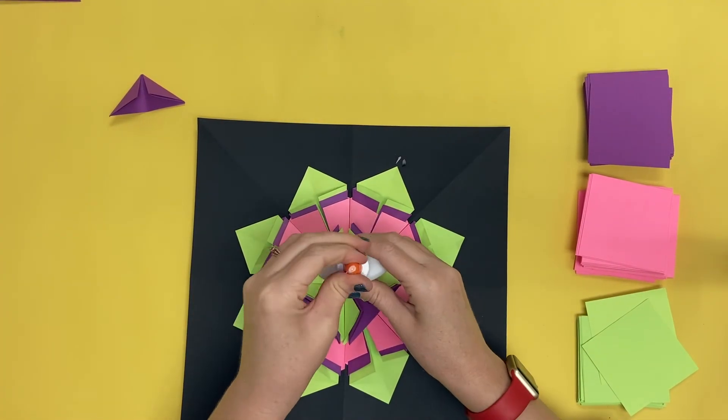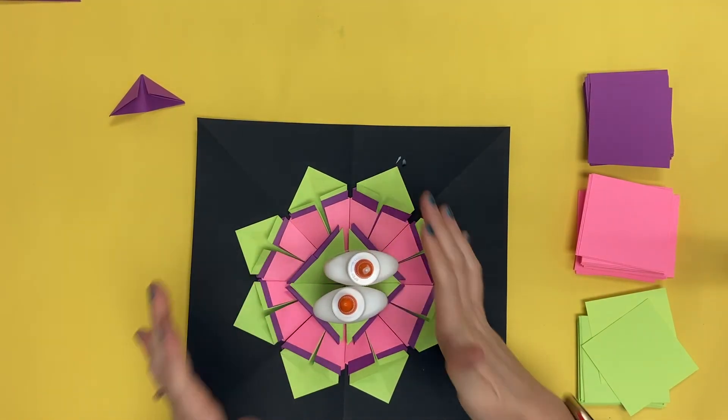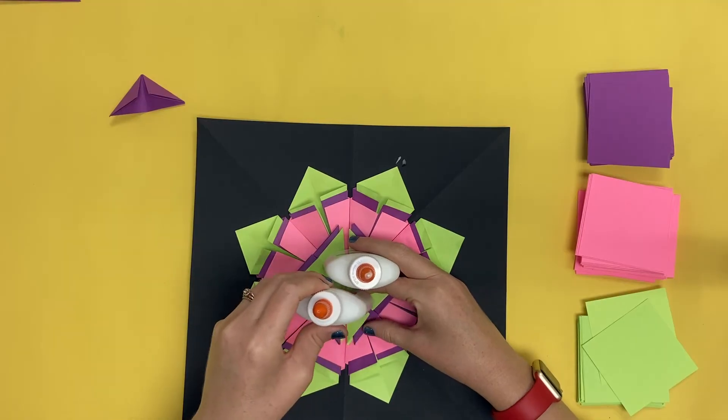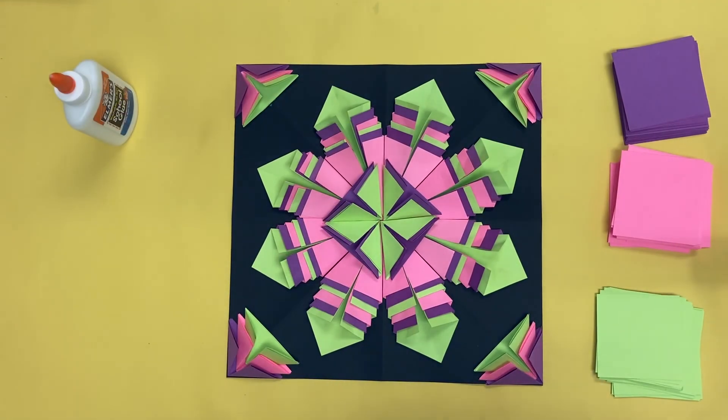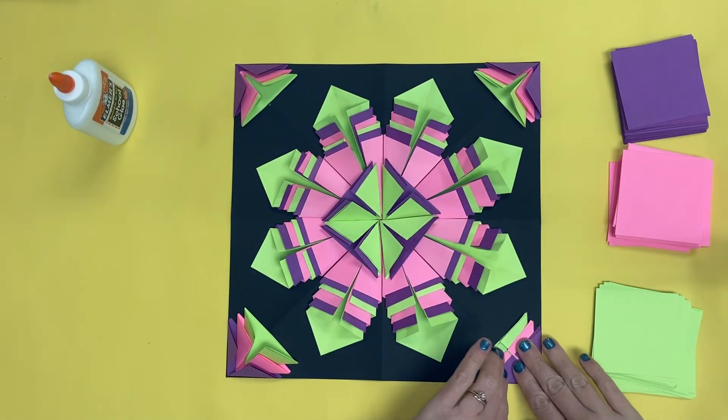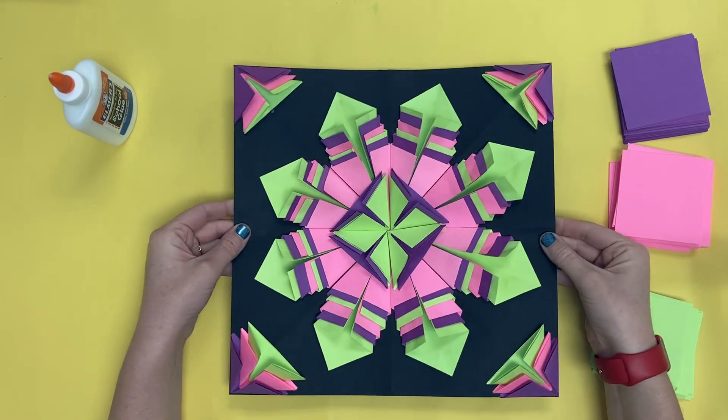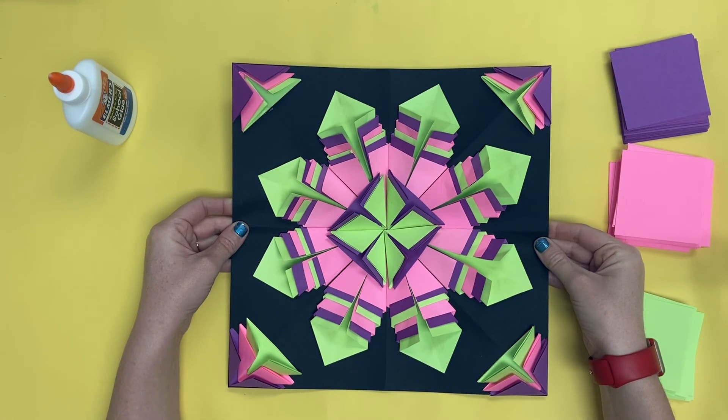If some of the pieces are having trouble sticking, press and hold. Maybe put something heavy on it like a glue bottle. Once you are all done designing your radial symmetry origami picture, make sure you clean everything up, put away all your extra materials, and your art project is finished for today.